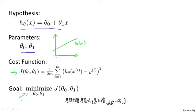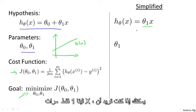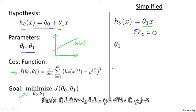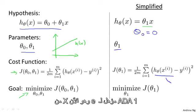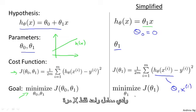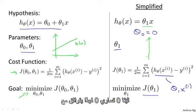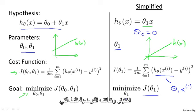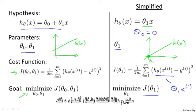For this video, in order to better visualize the cost function J, I'm going to work with a simplified hypothesis function. I'm going to use a simplified hypothesis which is just theta one times x. You can think of this as setting the parameter theta zero equal to zero, so I have only one parameter theta one. My cost function is similar to before, except that h of x is now equal to just theta one times x, and my optimization objective is to minimize J of theta one. In pictures, this means that if theta zero equals zero, that corresponds to choosing only hypothesis functions that pass through the origin.